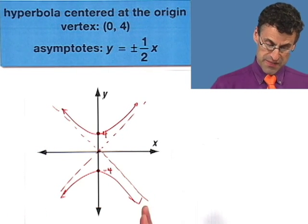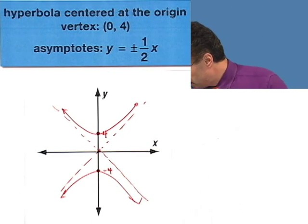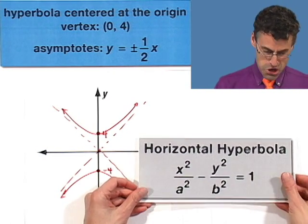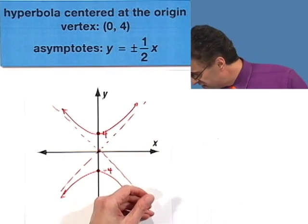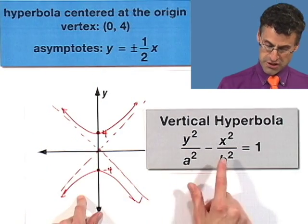which tells me that this is a vertical hyperbola. So, not a horizontal, a new enchilada, this is going to be a vertical one. And so this information cues me in on that.